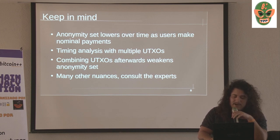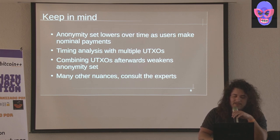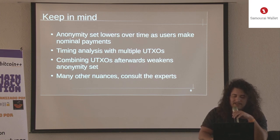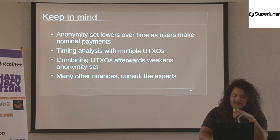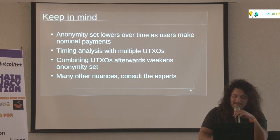There are also timing analysis concerns when spending multiple UTXOs, especially from different rounds. If you spent a year doing 20 CoinJoins and have 20 UTXOs, and then all at once you spend them all — even unrelated to each other — there's timing analysis suggesting these UTXOs basically all woke up at once. Combining UTXOs after a CoinJoin also weakens your anonymity set. There are many nuances; consult the experts. CoinJoining isn't a perfect solution in and of itself, and hopefully software gets better so a lot of it you don't have to think about.